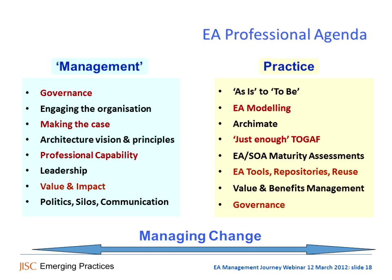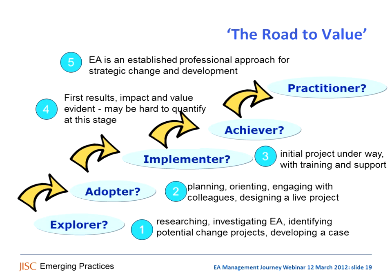If you are managing and leading EA, these are the areas on the left you need to have some comfort with. Back to the road to value — our familiar friend. It's our simple, almost crude description of our road, our journey. The important thing that we're all trying to get to is level four, the achiever, where you're getting the first results and value that people can notice and begin to be happy about. Thinking about who's here today, we're probably everywhere from one to four.